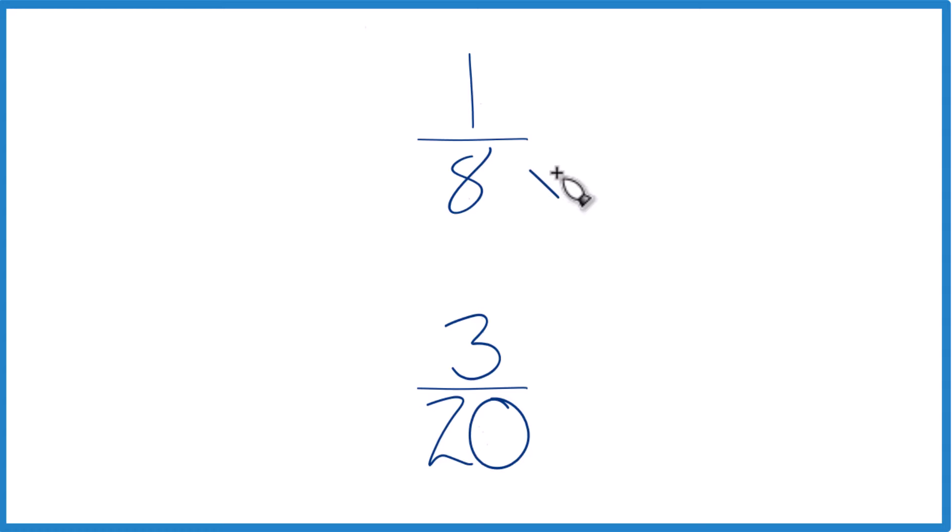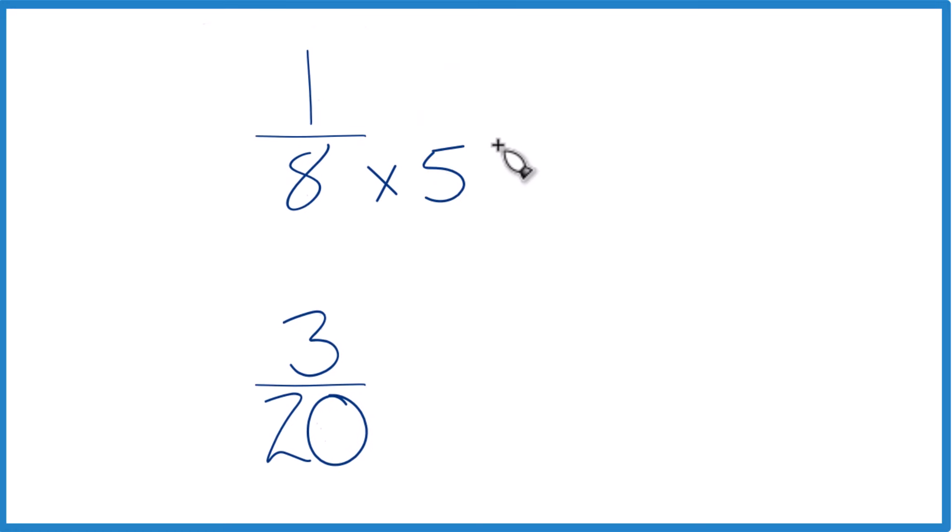I know that 8 times 5, that equals 40. And then down here 20 times 2, that would equal 40. So by doing that I get a common denominator, same denominator here.